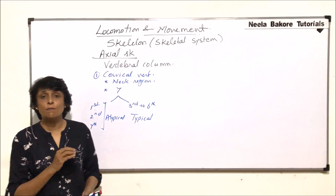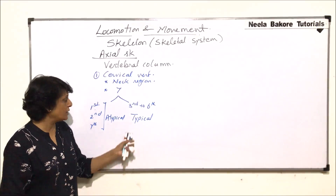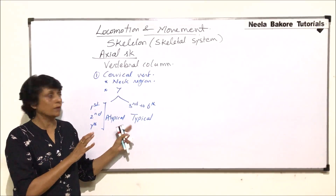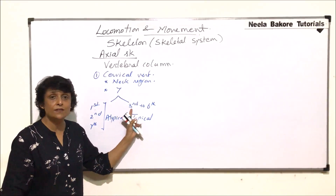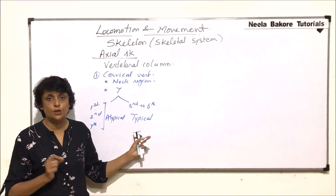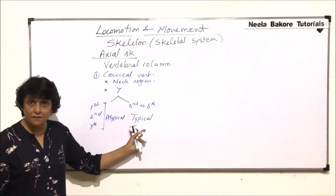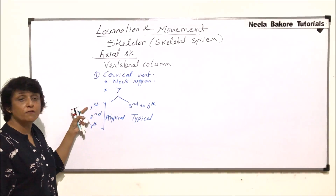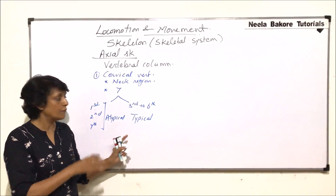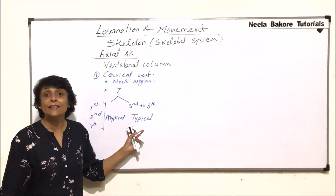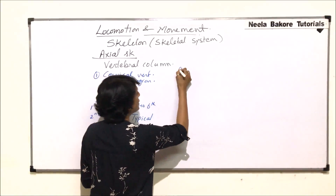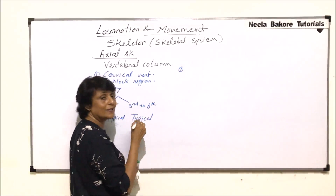What is meant by typical vertebral structure? Most vertebrae, that is third to sixth, are similar to a typical vertebra with only a minor change we will take up later. The first, second, and seventh are different from typical vertebrae. We will start with the first cervical vertebra.